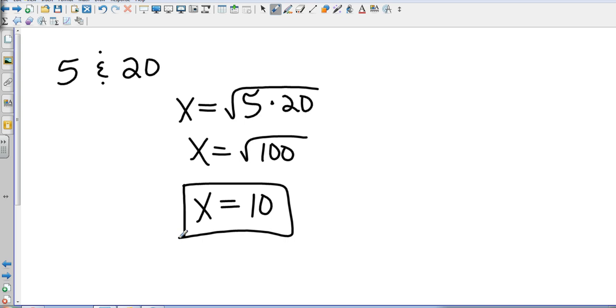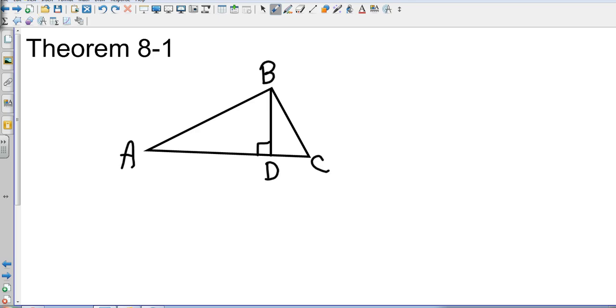So now we're going to look at some examples where we can use this to solve some triangles. Let's look at theorem 8-1. What I have drawn is I have drawn an altitude BD. In this case, the altitude is drawn to the hypotenuse of the larger triangle. I should have had a 90 degree angle here. So that way I know that AC is the hypotenuse.